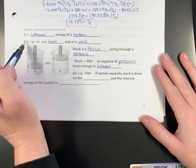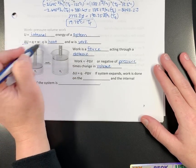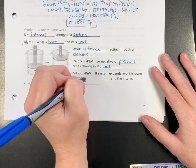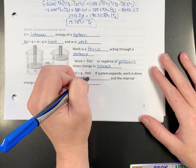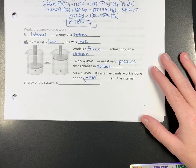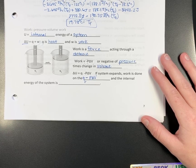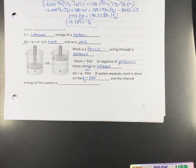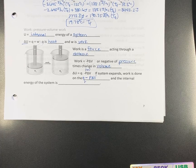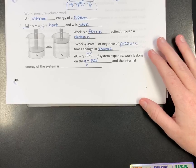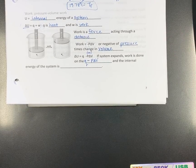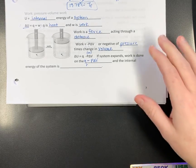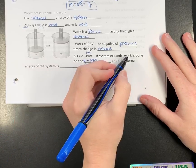So when we put these together — substituting W into the internal energy equation — the change in the system is heat. This is in a cylinder, minus pressure times the volume change, because that term represents work. This is just a derivation. So if the system expands, meaning it gets bigger, work is done.